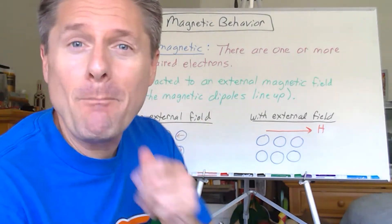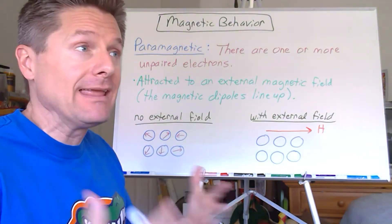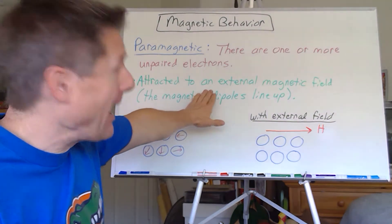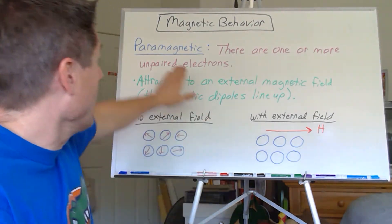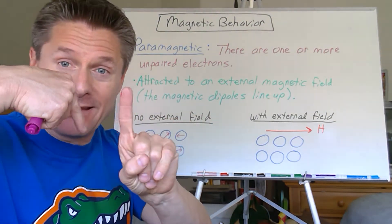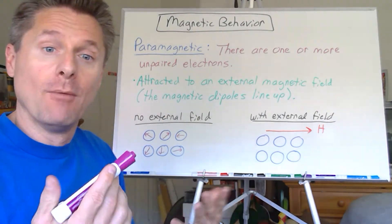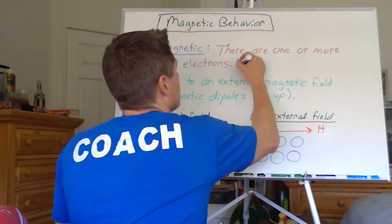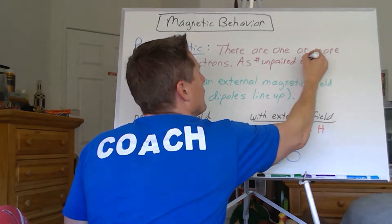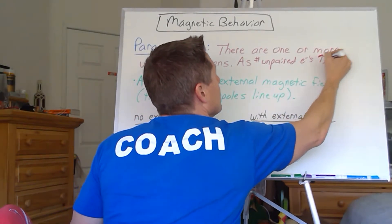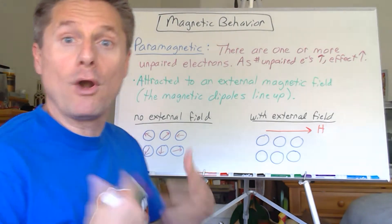Paramagnetic, or shows paramagnetism, means it's influenced by an external magnetic field. It's attracted to an external magnetic field. If you have one or more unpaired electrons, the magnetic field induced by that spinning electron is not canceled out. As the number of unpaired electrons increases, the effect increases. It becomes more and more paramagnetic.